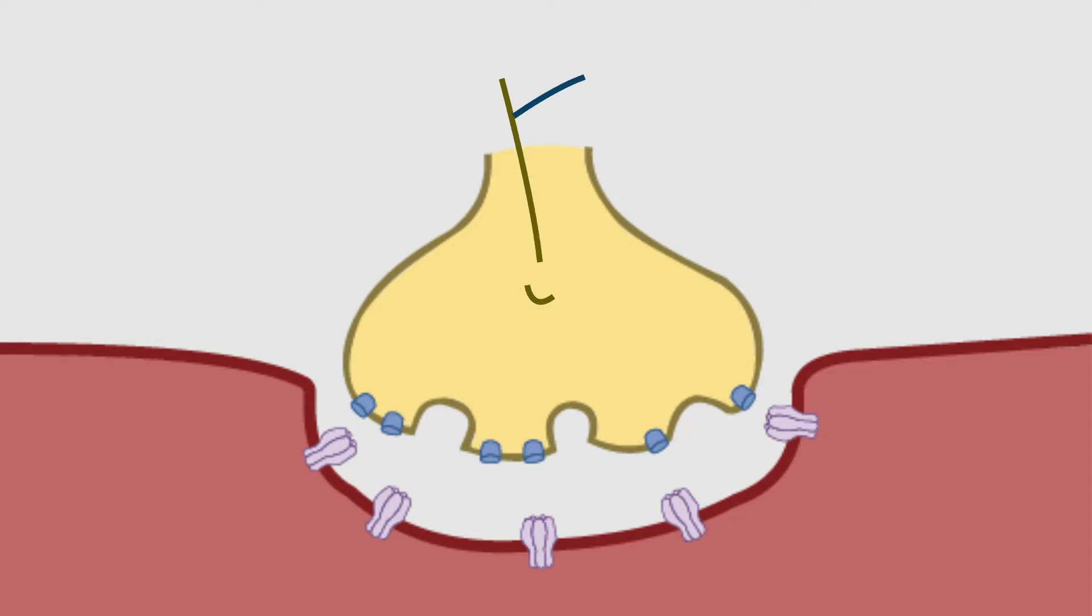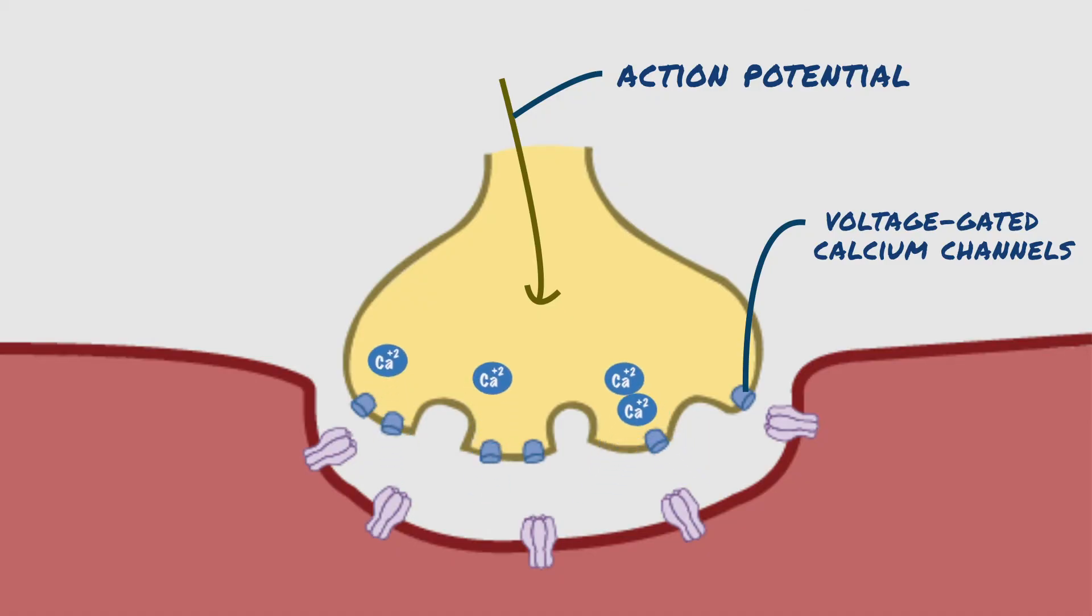When an action potential spreads over the axon terminal, voltage-gated calcium channels open, resulting in an influx of calcium ions into the axon terminal. Inside the axon terminal are synaptic vesicles that contain neurotransmitters called acetylcholine. These calcium ions entering the axon terminal bind to vesicles filled with acetylcholine, and this binding allows the vesicles to fuse with the membrane of the axon terminal.